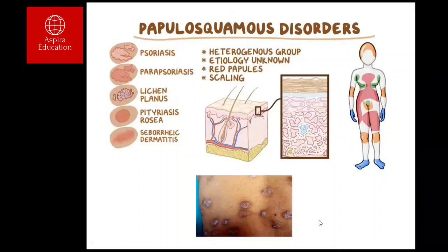Skin disorders can be classified as papillosquamous and bullous disorders. Papillosquamous disorders are diseases where there is predominant scaling. Scaling occurs because of excessive proliferation of keratinocytes — the skin cells forming the epidermis. They proliferate so rapidly that keratinocytes quickly become superficial cells, increasing the thickness of the superficial layer.